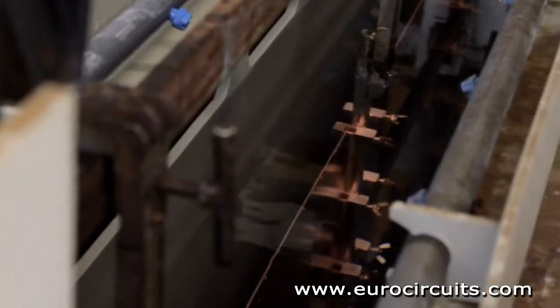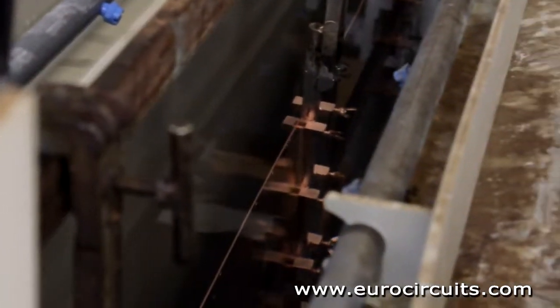That is, we deposit chemically a layer of copper about 1 micron thick over the walls of the hole and incidentally across the whole panel.